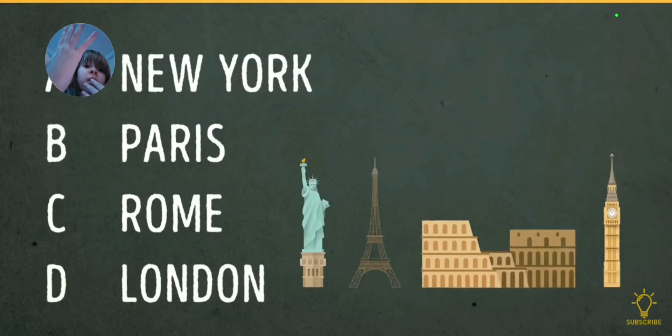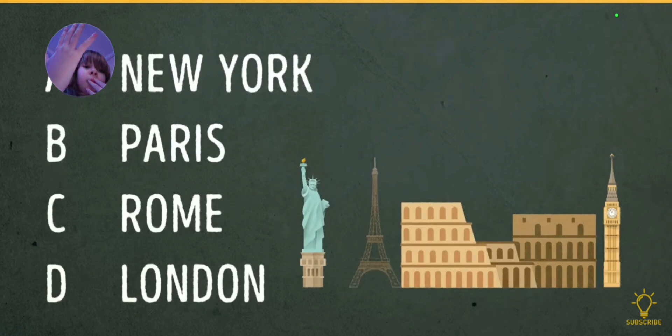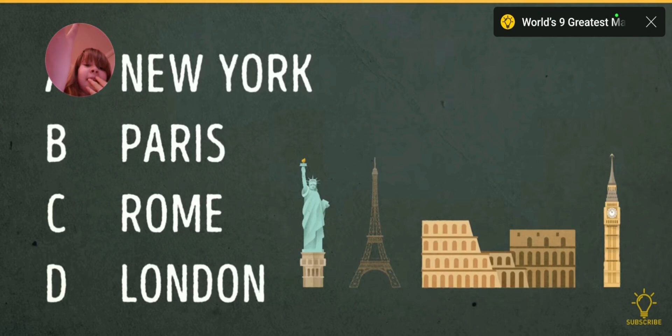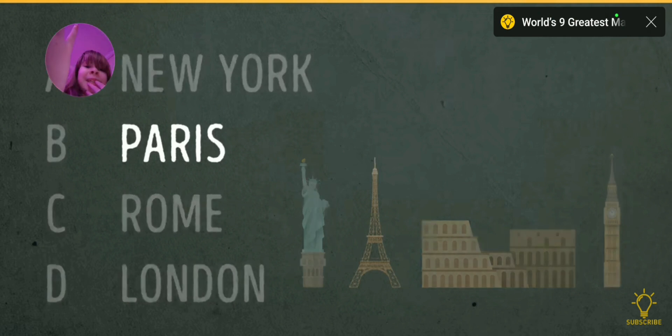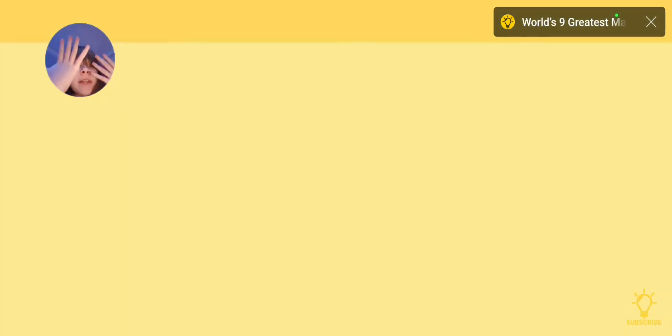Number 15. The headquarters of UNESCO is at A. New York. B. Paris. C. Rome. I don't know what these mean. Paris? Yeah! 50.